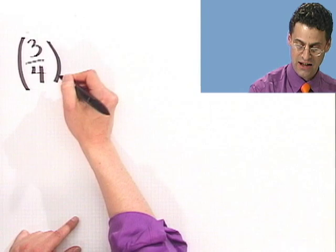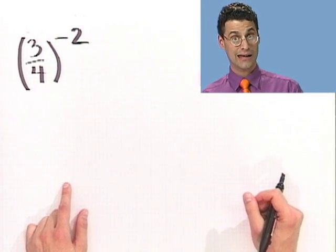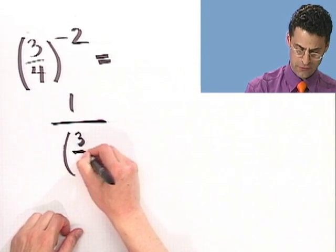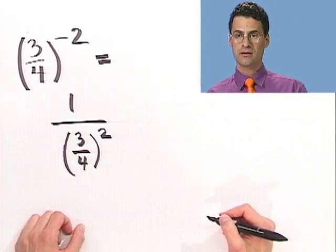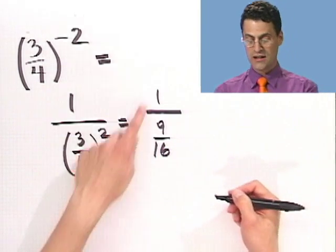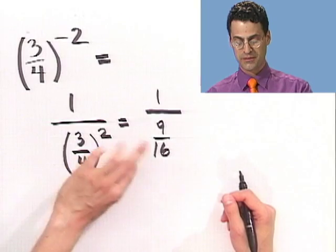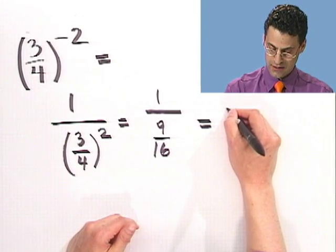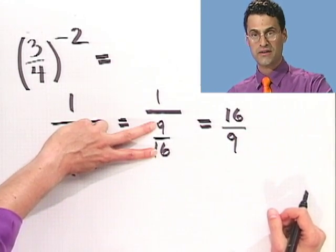Let's try one last one: take 3 fourths and raise that whole thing to the minus 2 power. First we flip: that would be 1 over (3/4) squared. Then I square 3/4 — using the rules of exponents you just square each term, so 3 squared is 9 and 4 squared is 16, giving 1 over 9/16. When you have this complex fraction, you take the bottom and flip it and multiply, but since it's multiplied by 1, you just take the reciprocal: 16 over 9. So negative exponents just mean flip the whole thing to get a positive exponent. That's all.